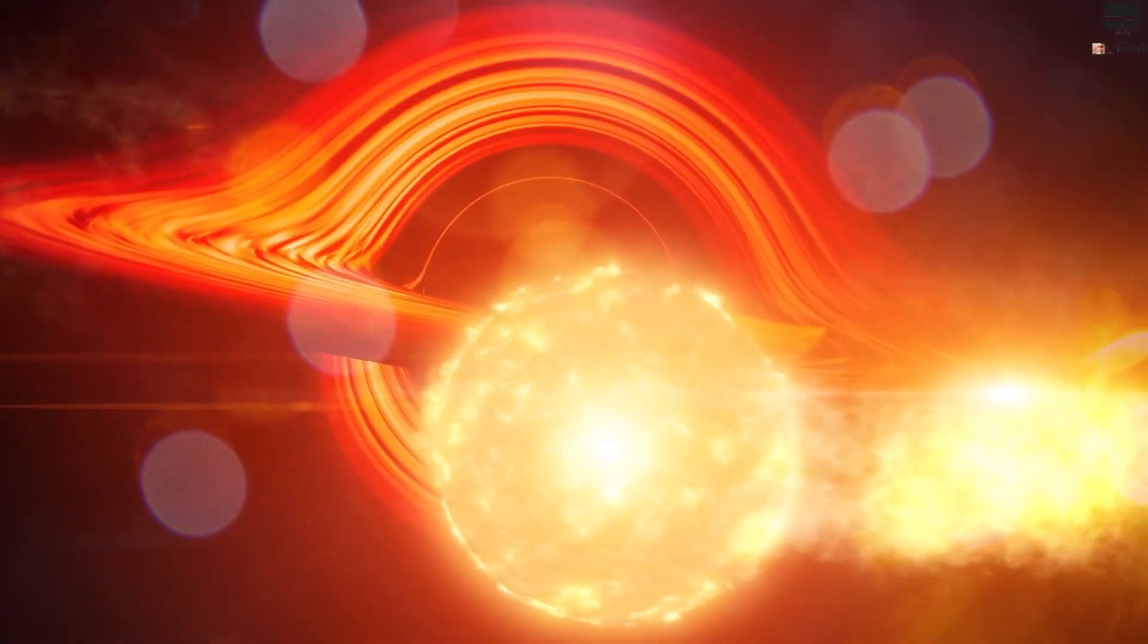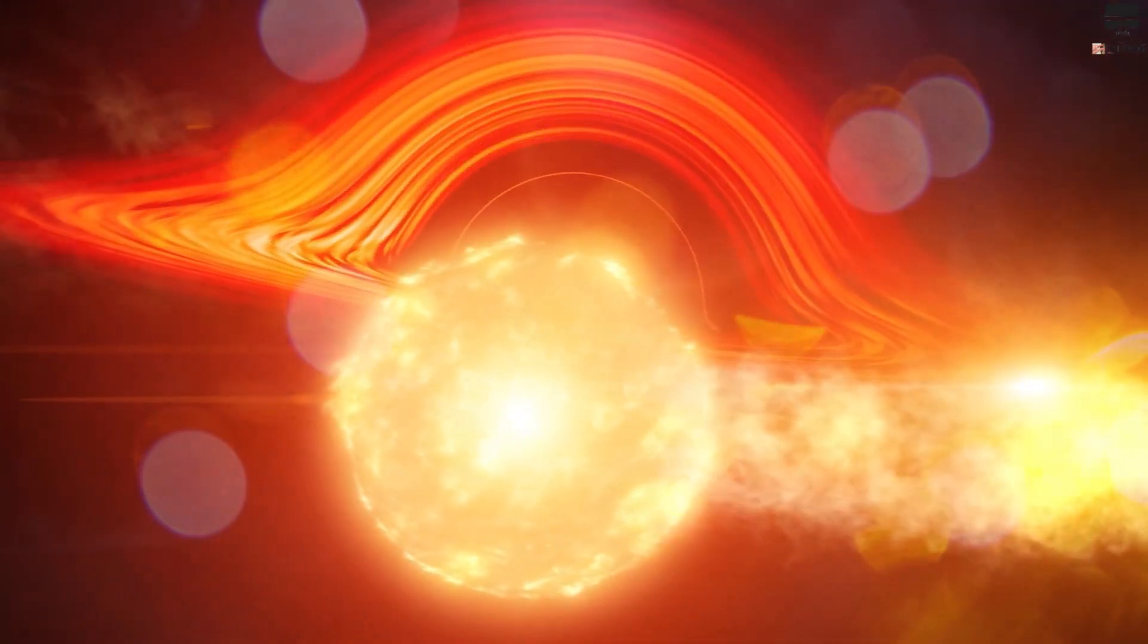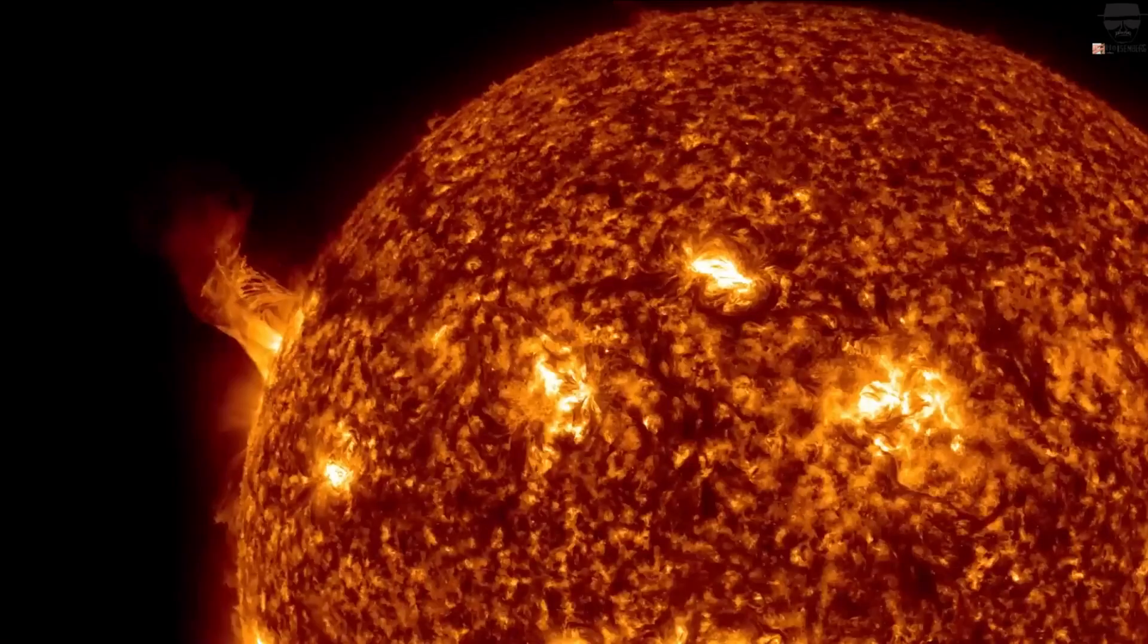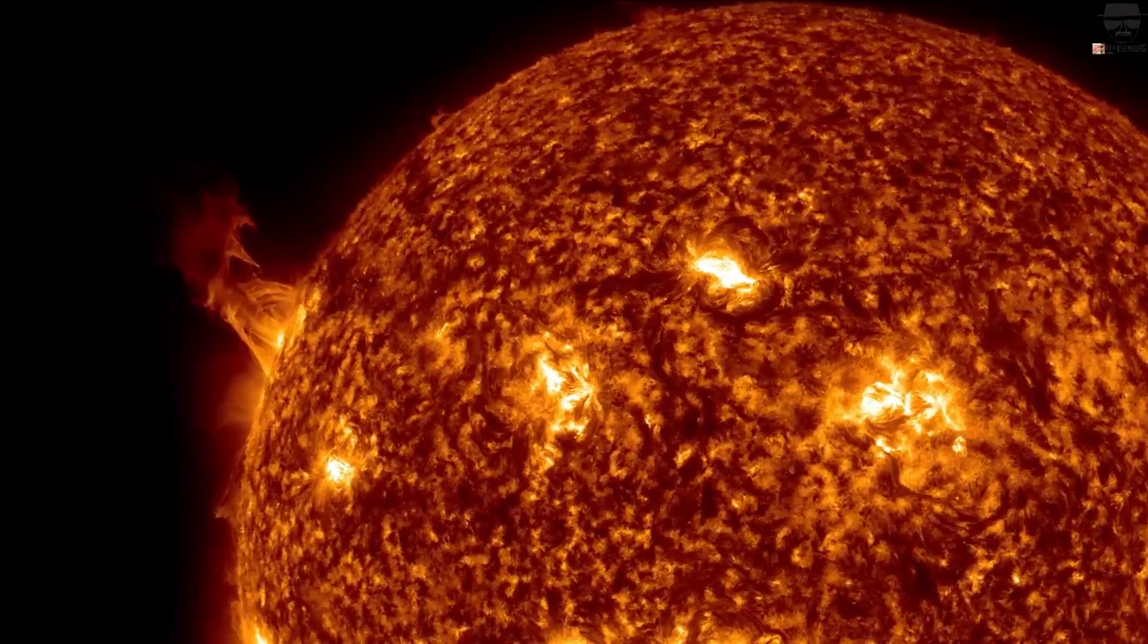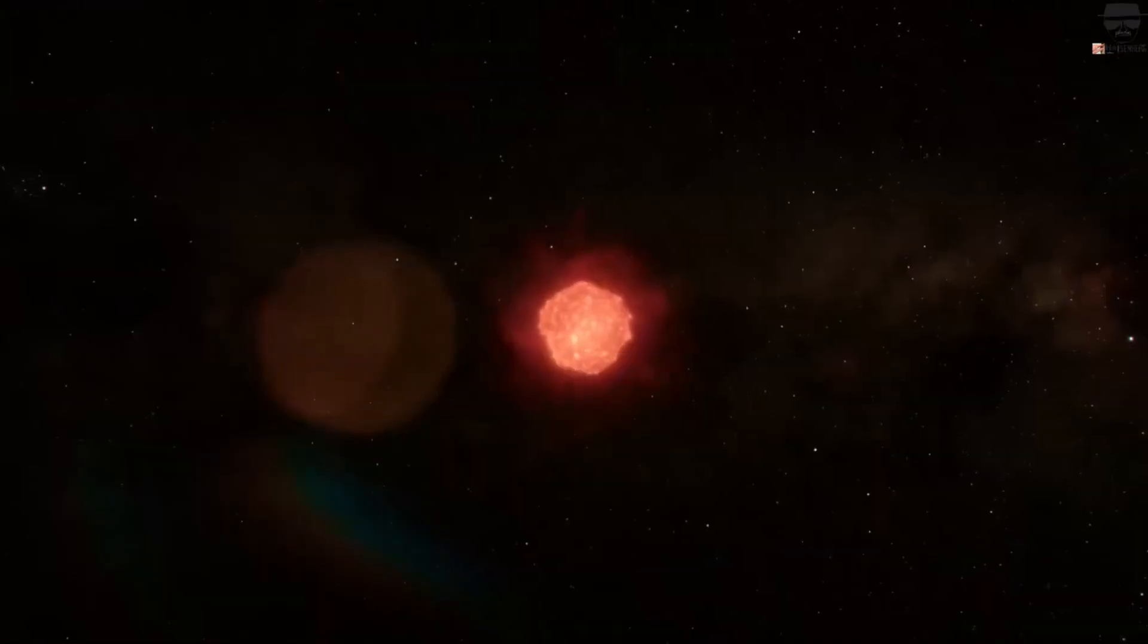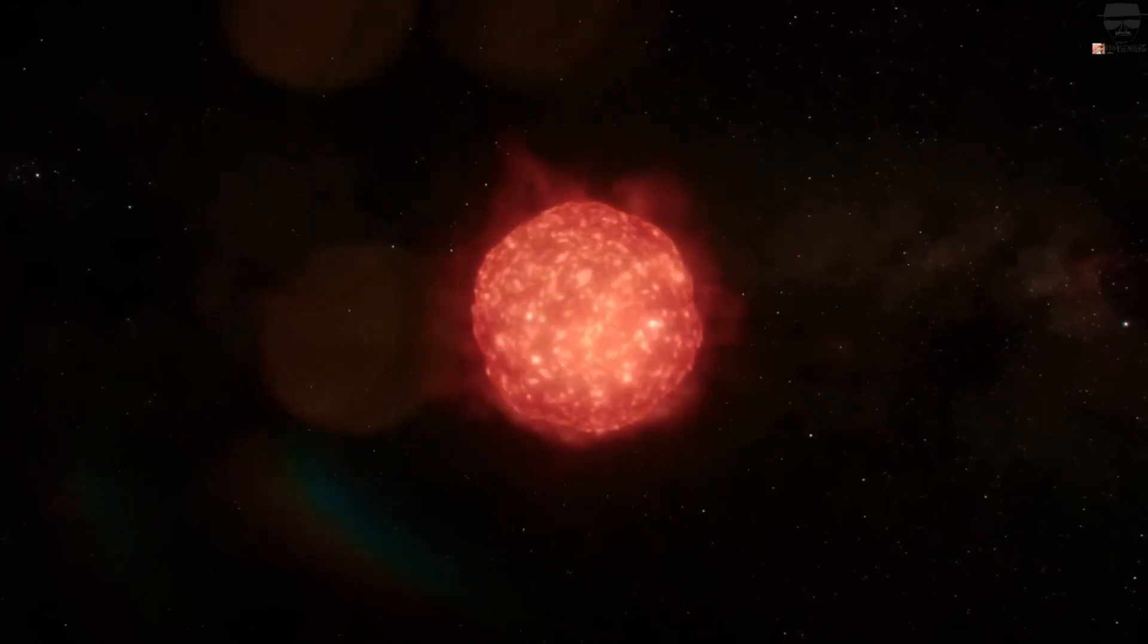And here is a quick one. Will our Sun ever become a black hole? Not really, due to a limitation. The Sun is saved by not having enough mass to collapse into a black hole. But that doesn't mean it will escape death.